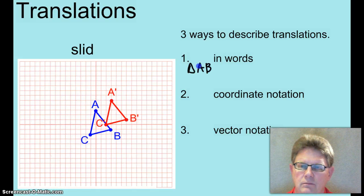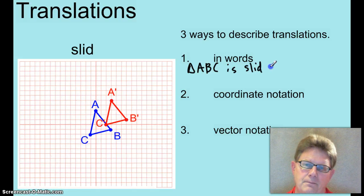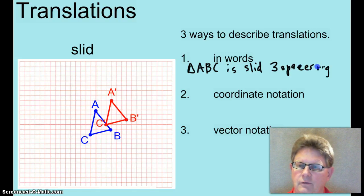Triangle ABC is slid three spaces right and two spaces up.